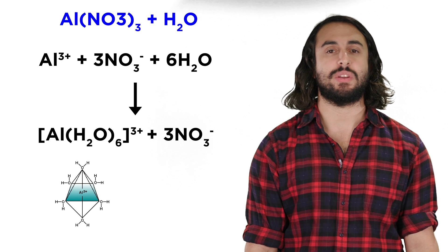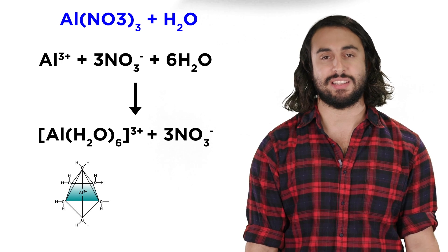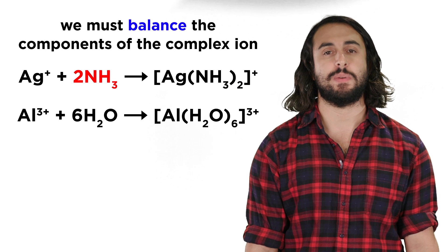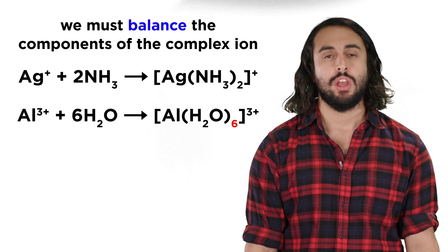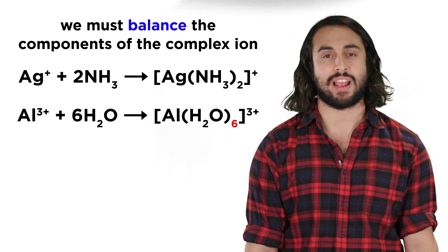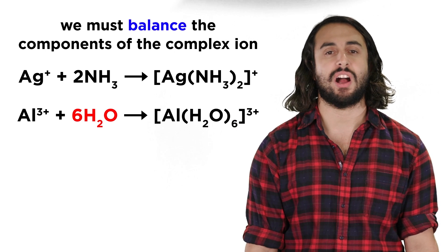In both of these cases, we simply need to make sure each ion is balanced. If there are two ammonias in this complex ion, two ammonias must be involved on the reactant side. For this one, if six water molecules are needed to form the complex ion, there must be six waters on the reactant side.